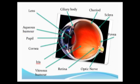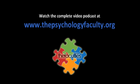Then we have the iris, which gives the eye its colour. It's essentially a ring of muscle fibres that controls the diameter of the pupil, so it regulates the amount of light that's let into the eye.